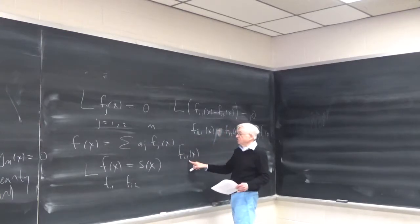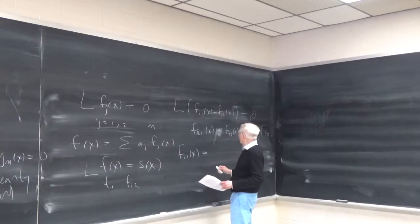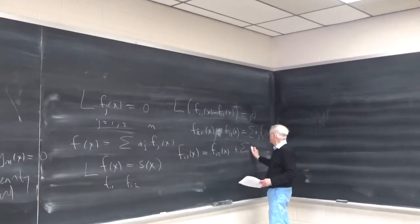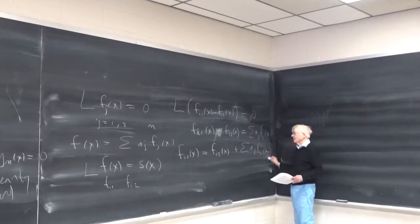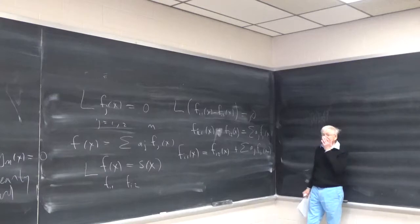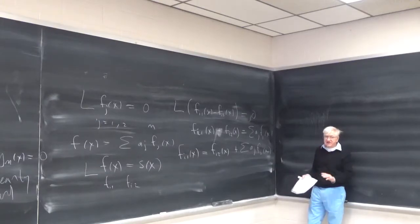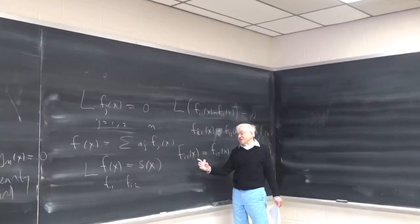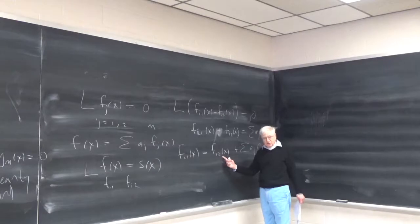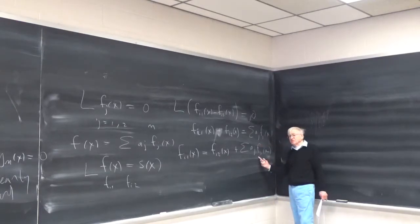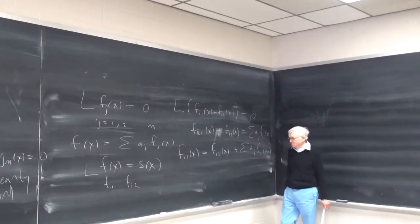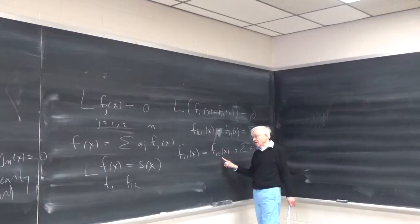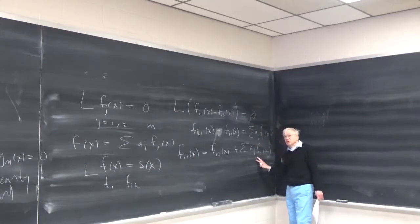The general solution of the inhomogeneous equation is any particular solution of the inhomogeneous equation plus the general solution of the homogeneous equation. This is a general property of linear equations.